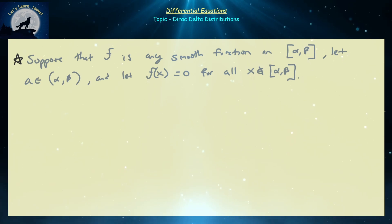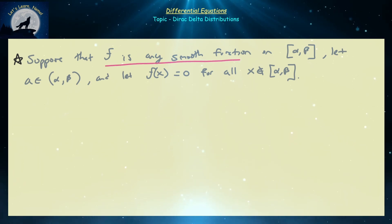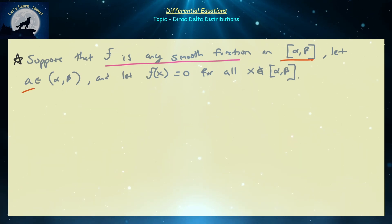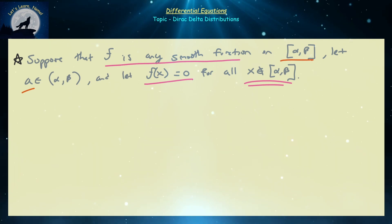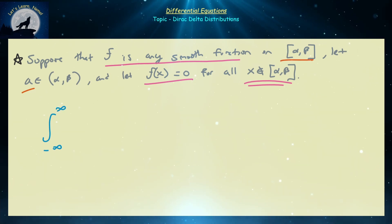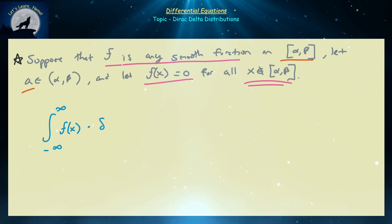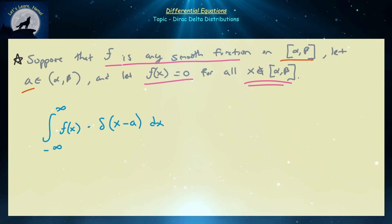Now let's build another very important property. Suppose f is any smooth function on the closed interval [α, β], a is a point in the interior of that interval, and f(x) = 0 outside [α, β] — we say f has compact support. Let's look at the integral from −∞ to ∞ of f(x) · δ(x − a) dx, where δ(x − a) is a shifted version of Dirac delta.